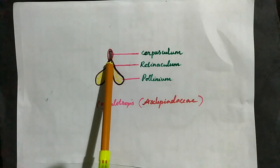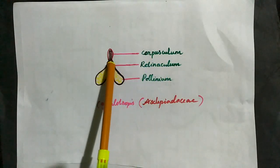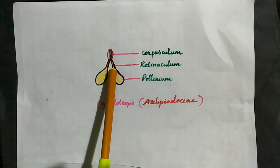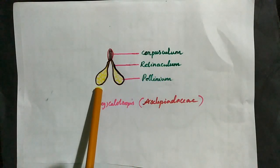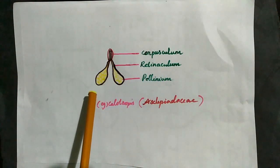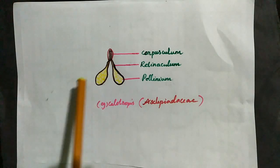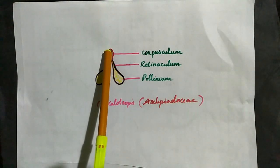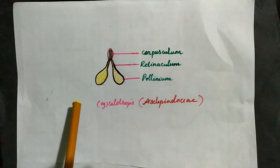The pollinium has a clip-shaped structure called the corpusculum. The corpusculum is connected by the retinaculum. In an inverted Y-letter shape, there is a structure called the translator. This translator connects the two pollinia to the corpusculum, facilitating cross-pollination. The sticky end ensures cross-pollination occurs.